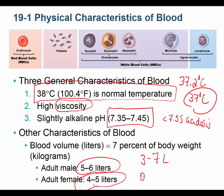You can calculate blood volume by multiplying 0.07 by body weight in kilograms. For example, a 220-pound person is about 100 kg, so 100 × 0.07 = 7 liters of blood. Blood volume is approximately 7% of body weight — and that body weight must be in kilograms, not pounds.